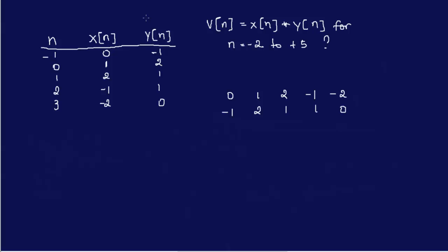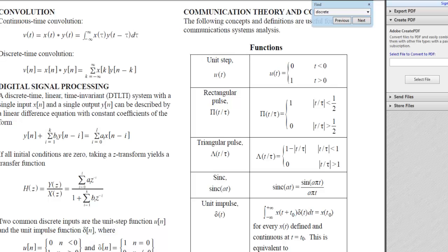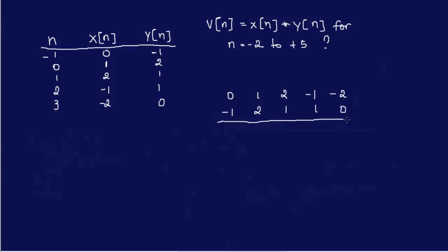The concept is to use that summation. You can also do it by hand, computing the summation one by one for every k, but it will take a long time. So let's do it quickly. We're multiplying zero by the whole y of n sequence — zero times minus two is zero, and so on — all zeros, and then shifting. Then one times minus two is minus two, giving us: minus two, minus one, two, one, then zero, and we shift again.